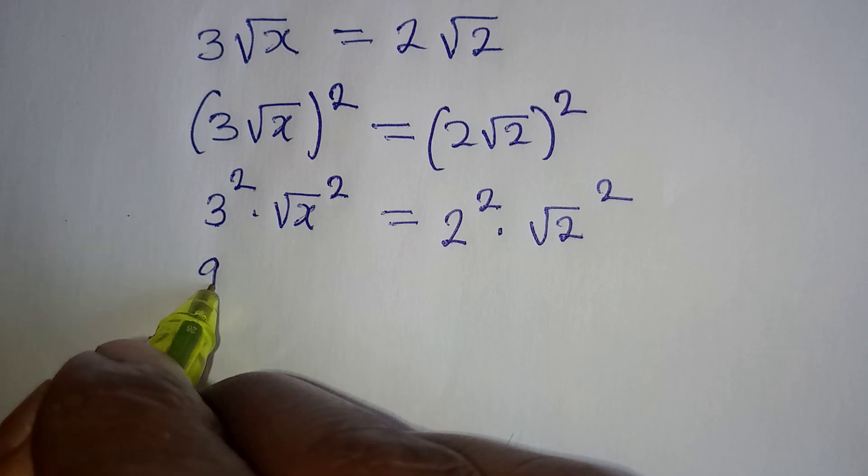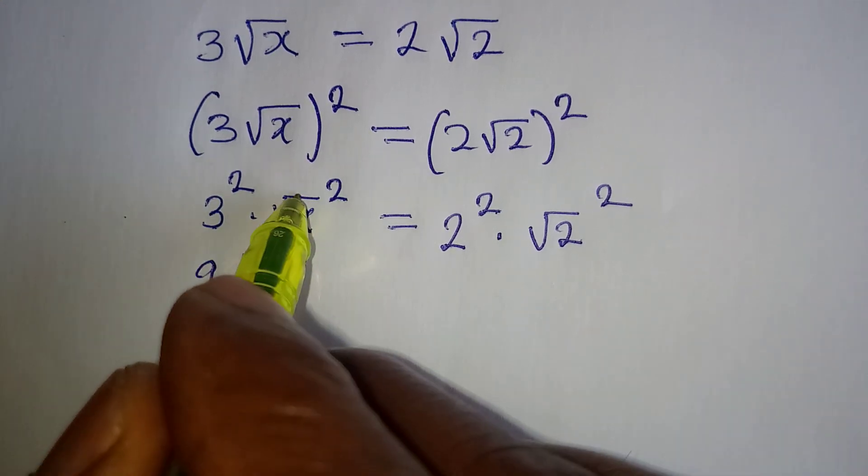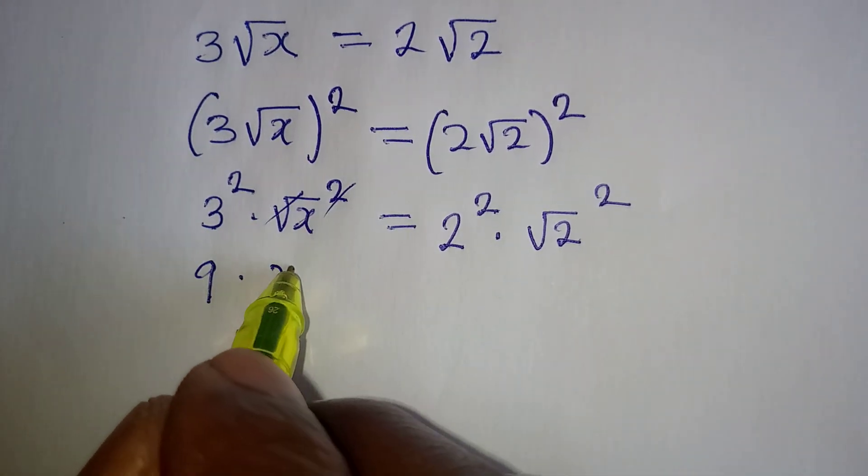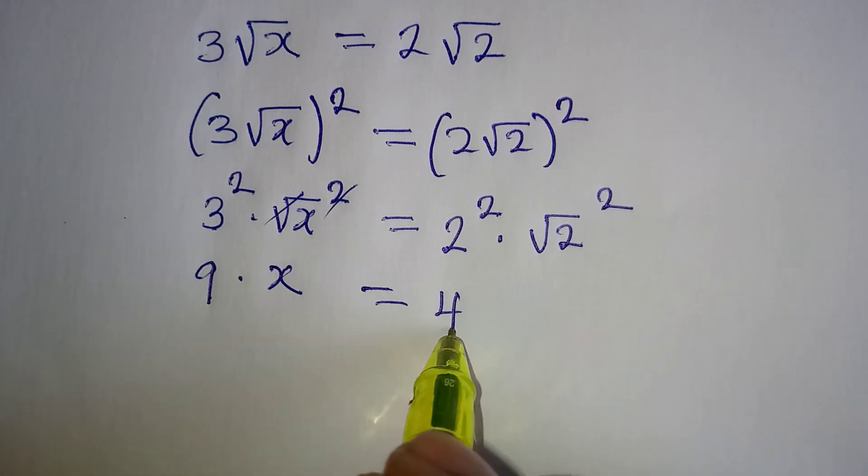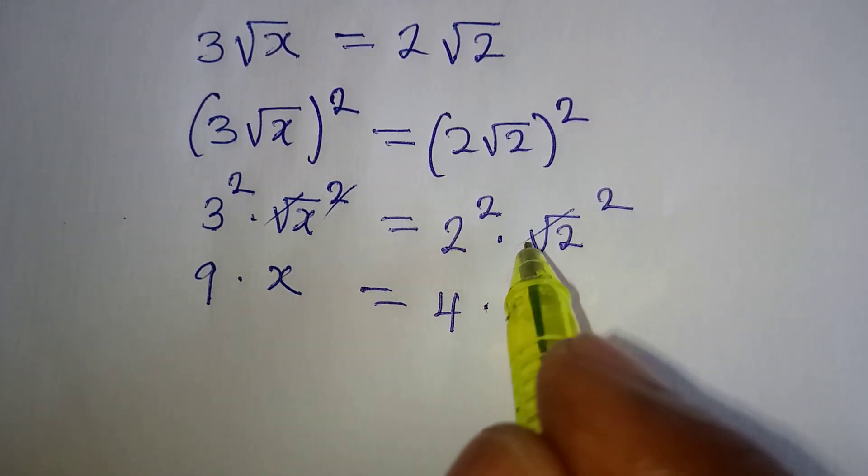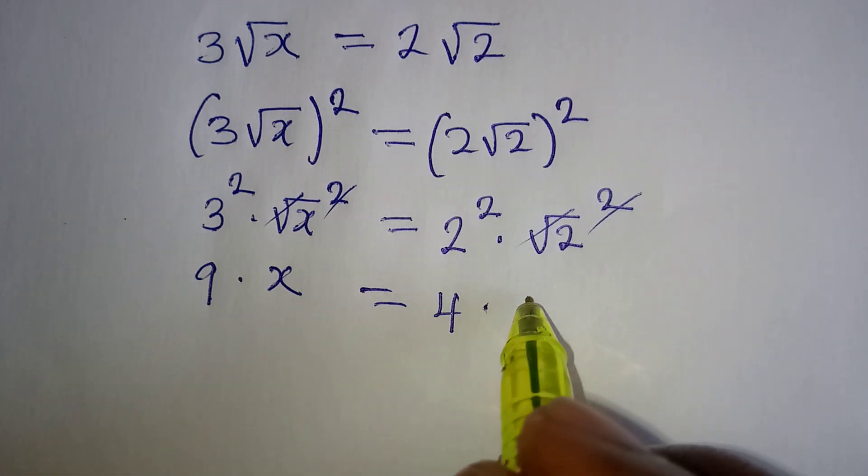3 squared is 9 multiplied by this and this will cancel. So we have x and this is equal to 4 multiplied by this. We cancel this and we have 2.